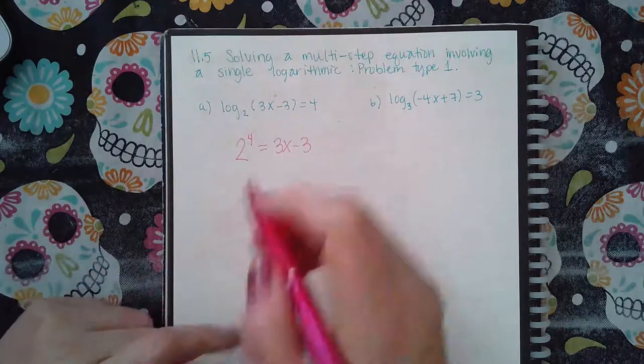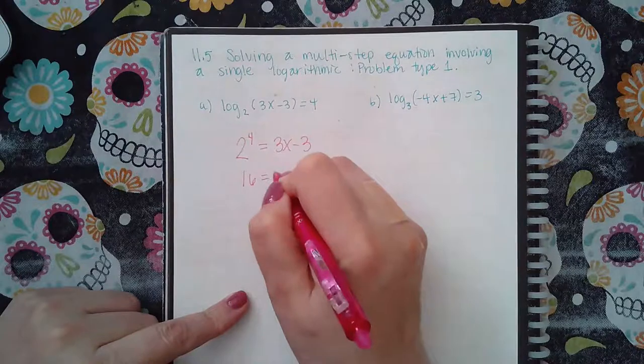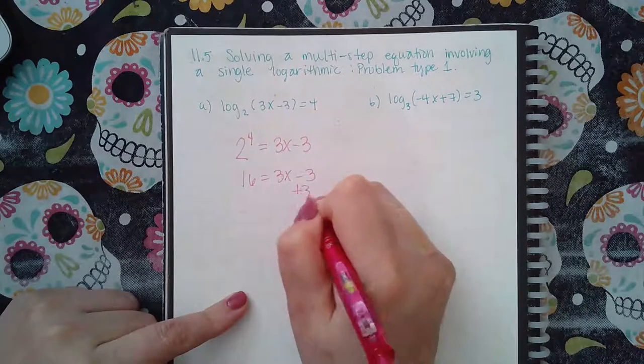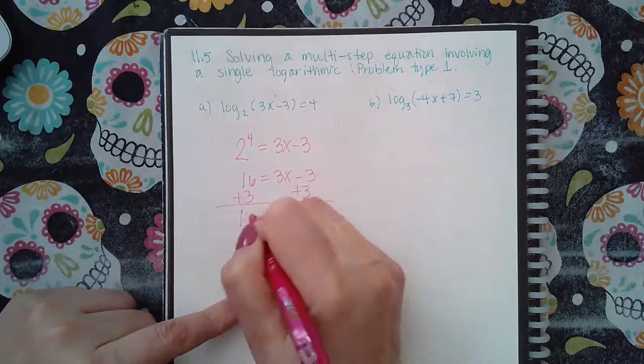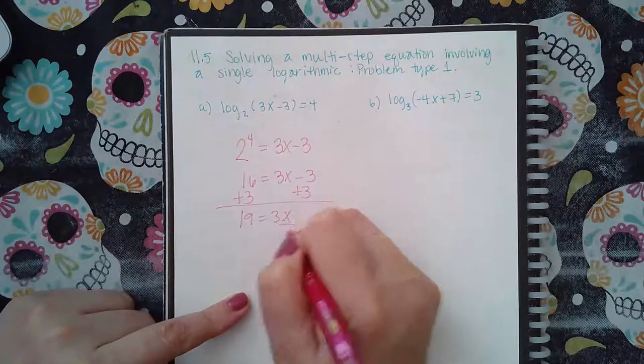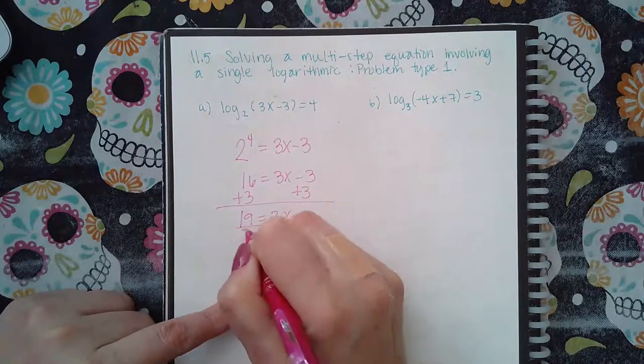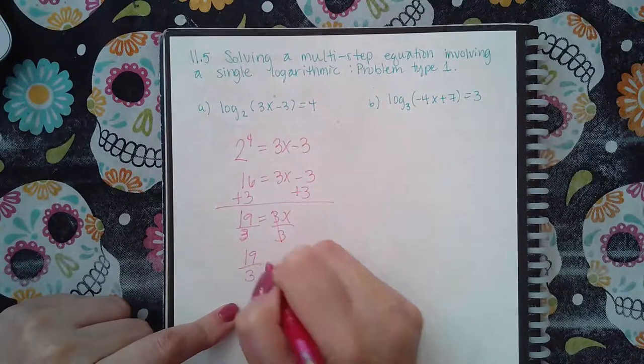I can solve this. It's just a regular problem. 2 to the fourth is 16, so this is a regular linear equation. Add 3 to both sides, you get 19 equals 3x. Divide by 3 on both sides, you get that 19 over 3 is equal to x.